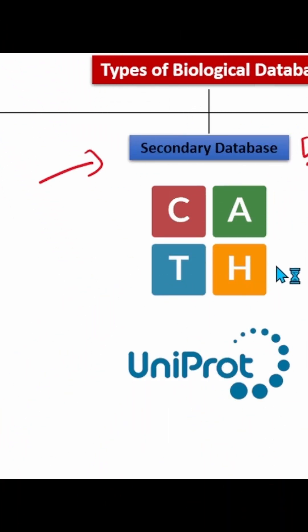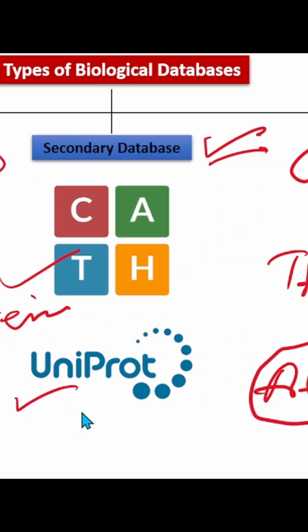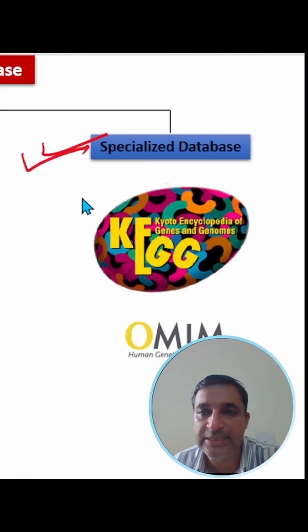Examples of secondary databases include gap database which contains information about protein structures such as protein folding patterns. UniProt database is also an example of a secondary database.